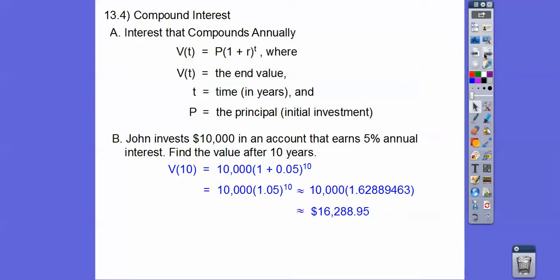And so if we do 1.05 to the 10th, we get about this. And don't round it to 1.63 because when you're talking money, banks certainly won't round it to that. They'll carry it out as far as their computer will let them do that. So after 10 years of 5%, he let that money work for him and he gets over 6 grand for investing $10,000.